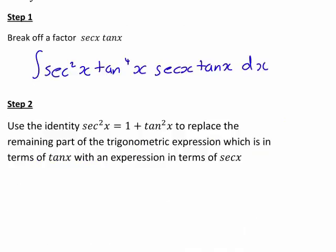Now, at the next step, we're going to leave this sec(x)tan(x) factor that we've broken off alone for the minute and focus on any other tan(x) term remaining, which is this one here. We're going to use the identity sec²(x) = 1 + tan²(x) to replace this expression here, tan⁴(x) in this case, with something in terms of sec(x). How will that work in this case?